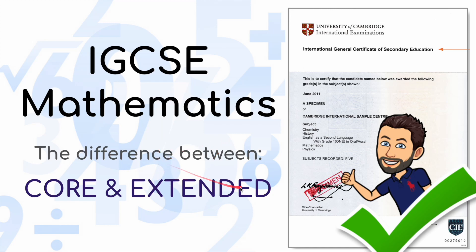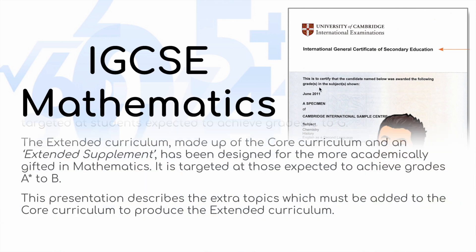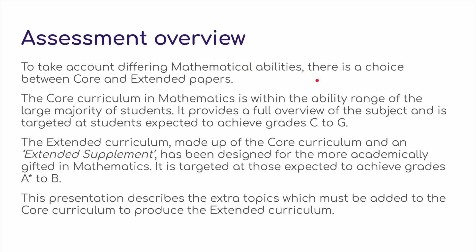In this video, we're going to look at the difference between core and extended for IGCSE mathematics, in particular the 0607 paper. To take into account the differing mathematical abilities, there is a choice between core and extended papers. The core curriculum is within the ability range of the large majority of students and is targeted at grades C to G. The extended curriculum is made up of the core curriculum plus an extended supplement, designed for the more academically gifted, targeting grades A to B. This presentation describes the extra topics added to core to produce the extended curriculum.